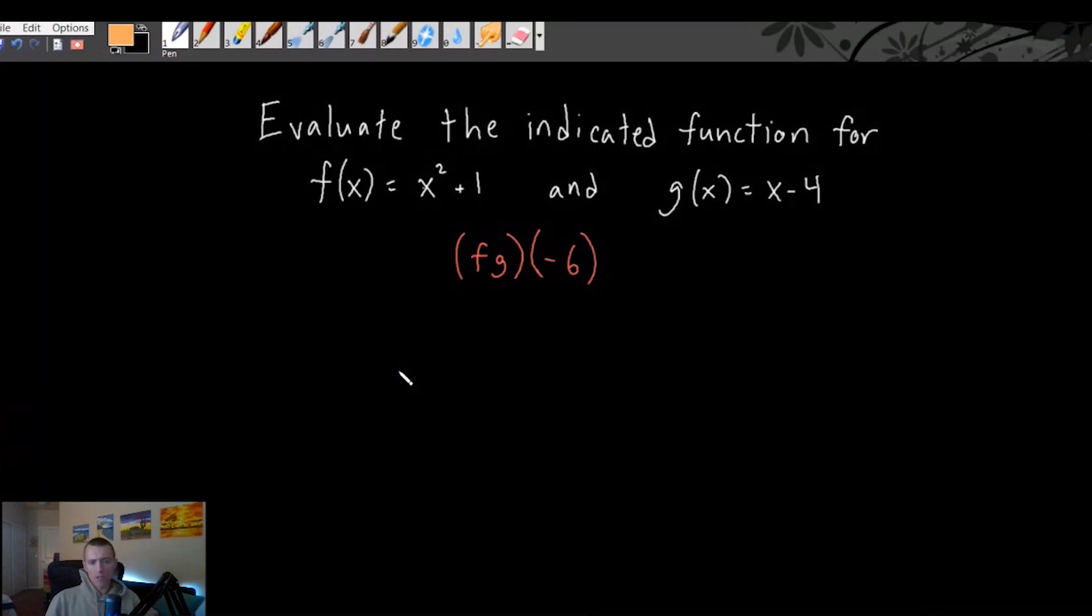We're going to evaluate the indicated function for f of x equals x squared plus 1 and g of x equals x minus 4. And the function that we're going to be evaluating is f times g of negative 6.